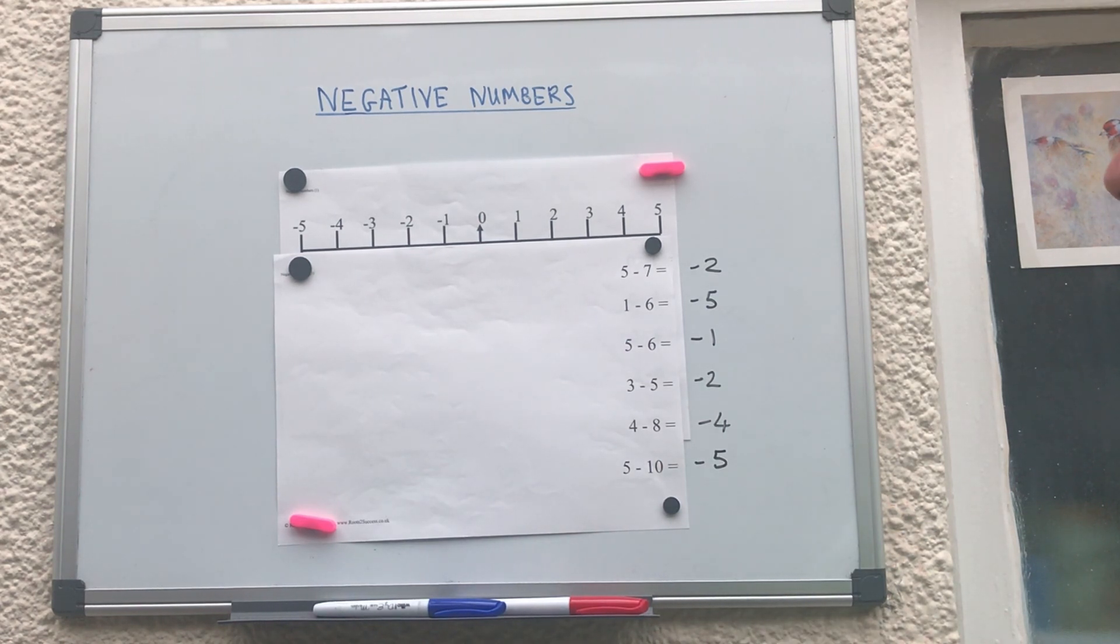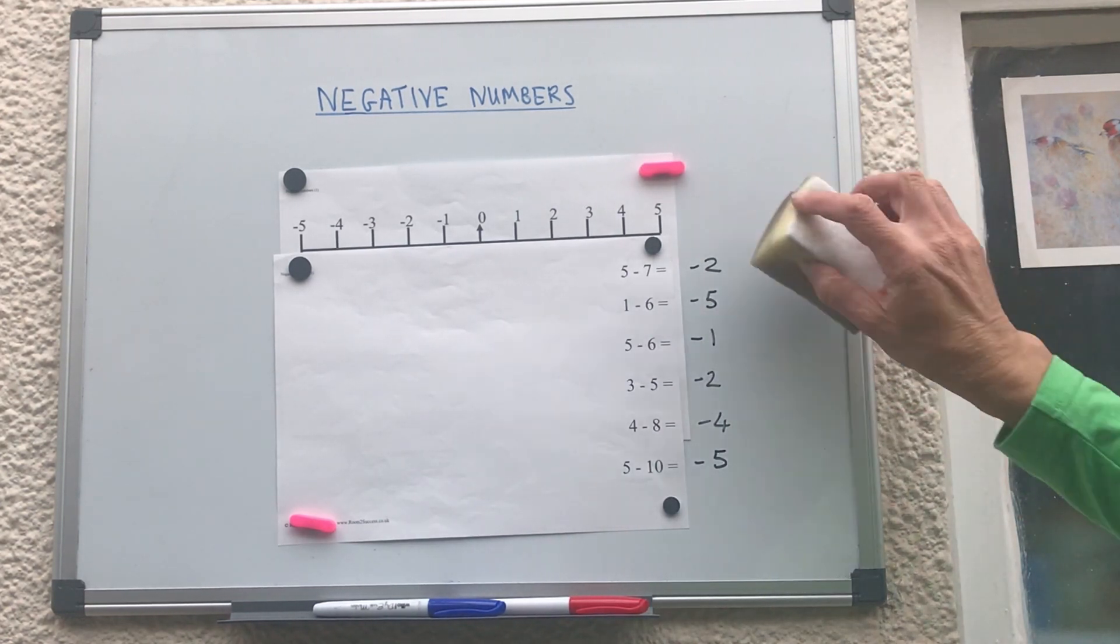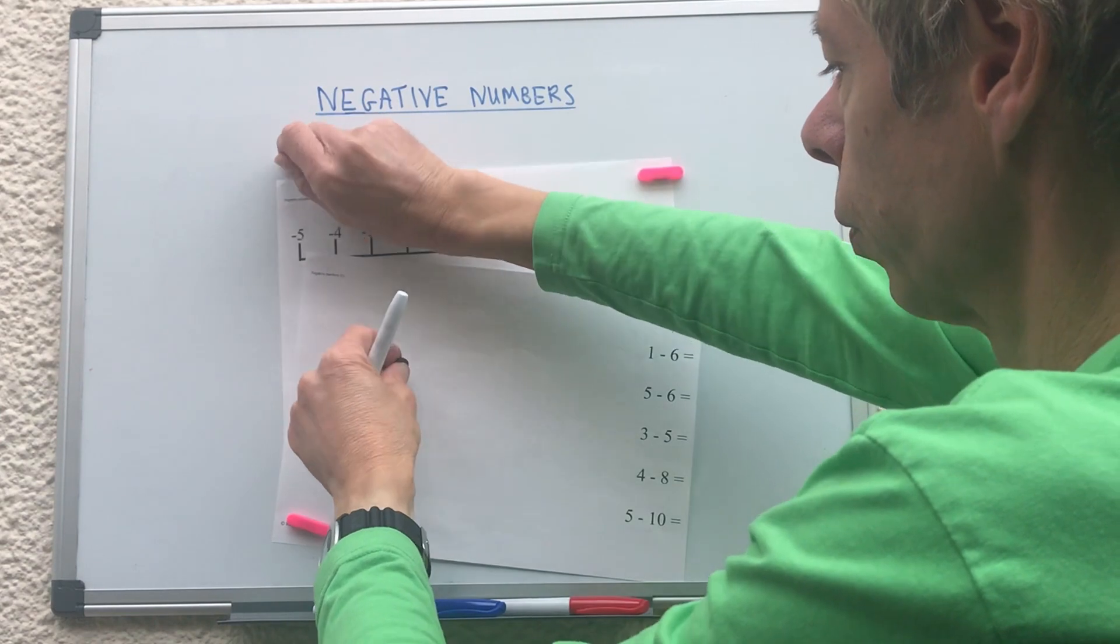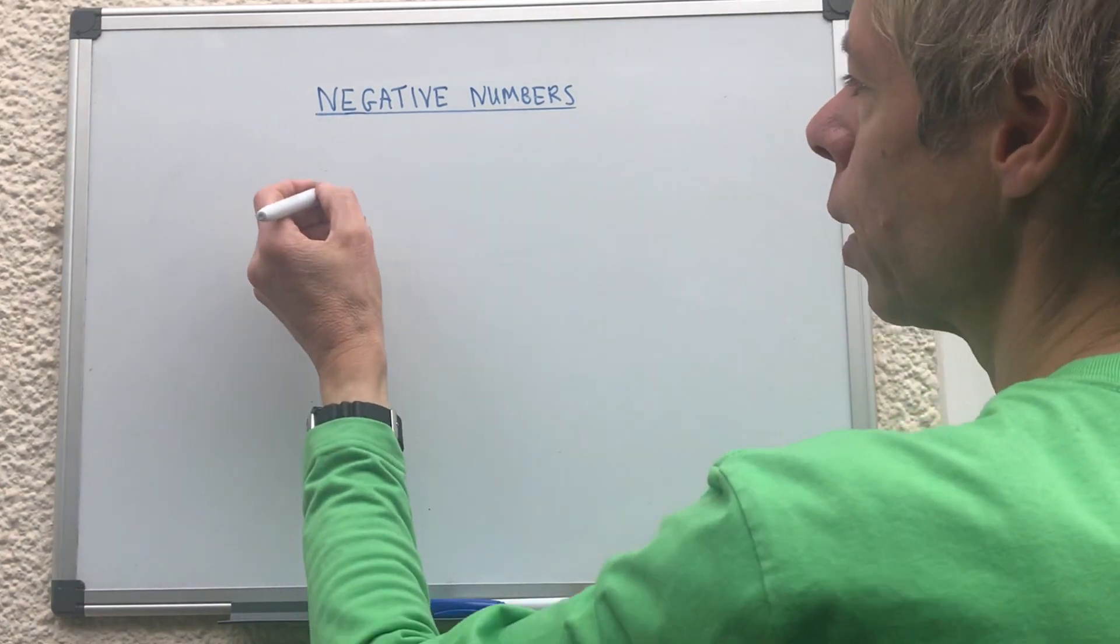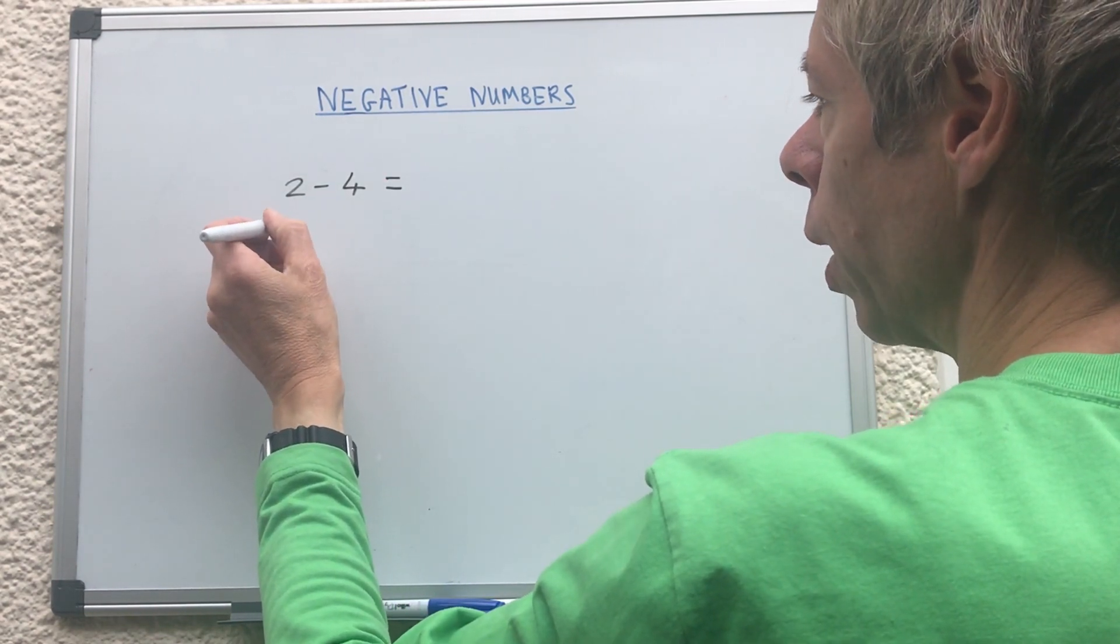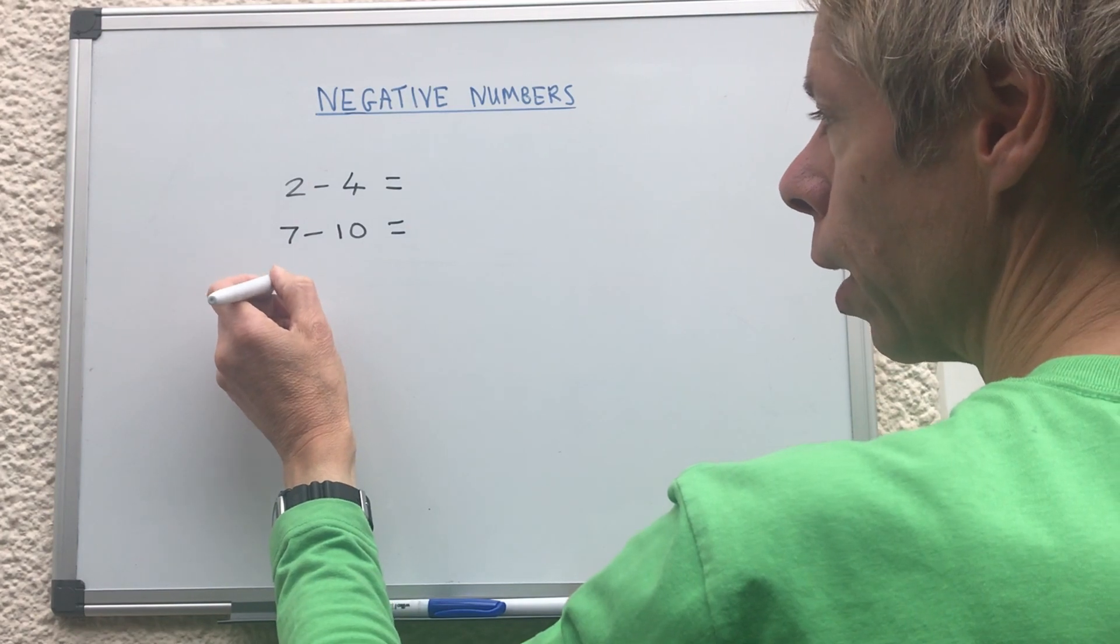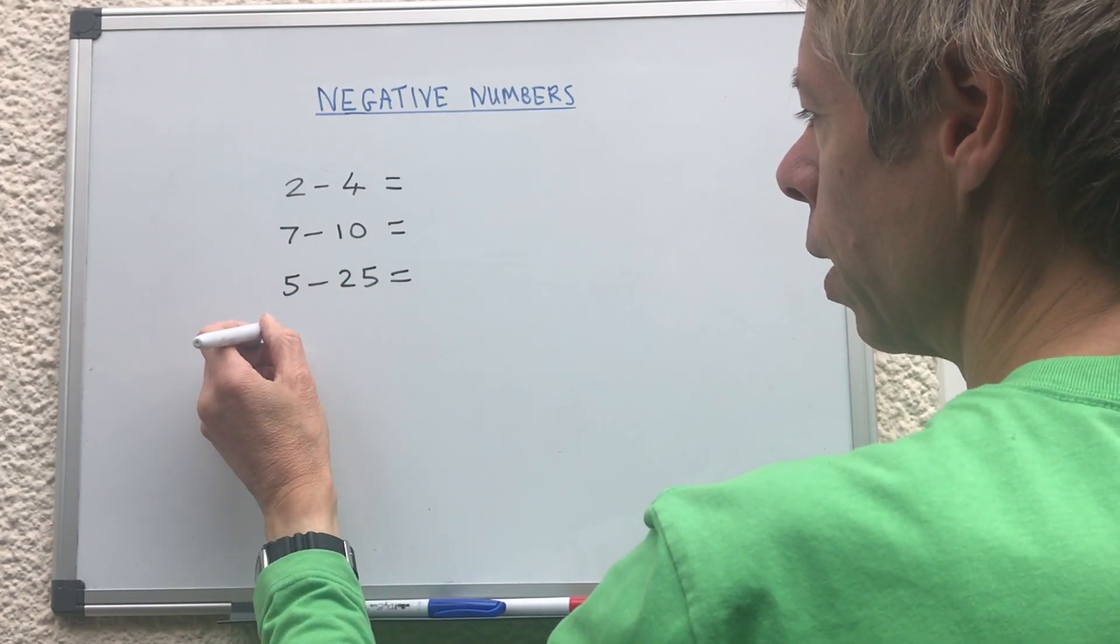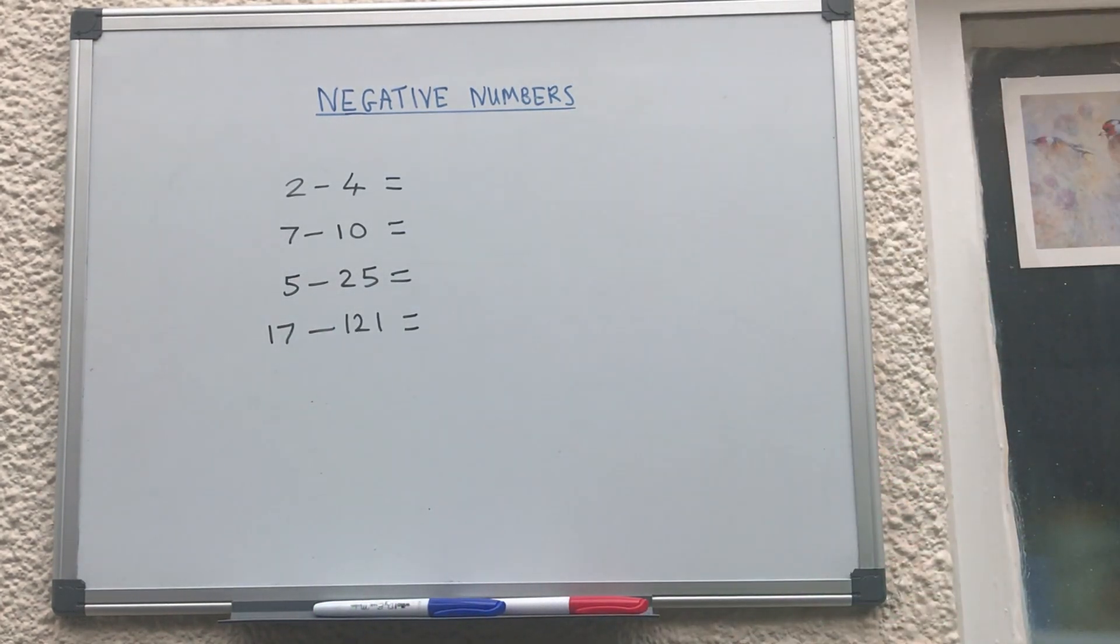So it's pretty straightforward. I'm going to take away the little scale and those answers and then get you to have a go at some. So if we had two minus four, that's our first question. Second question is going to be seven minus ten. Next question is going to be five minus twenty five. And the last question is going to be 17 take away 121.